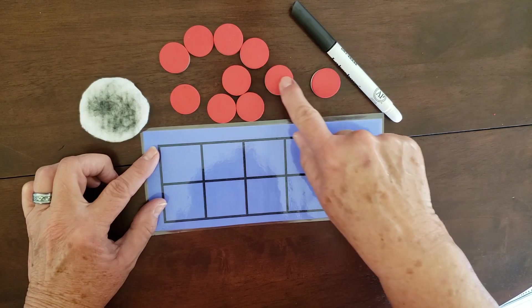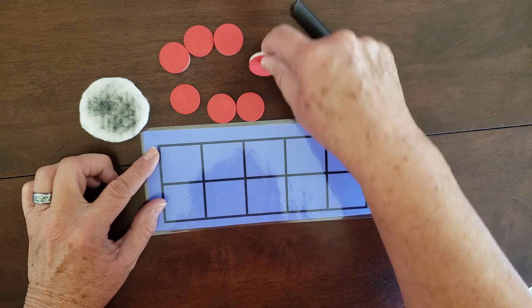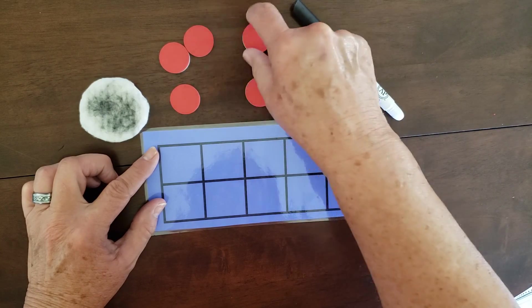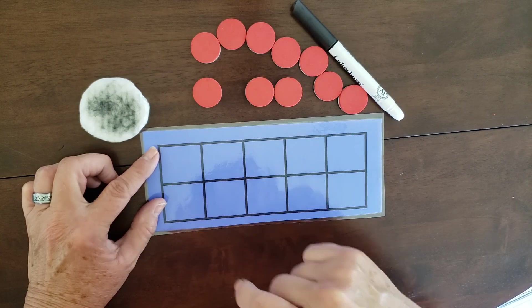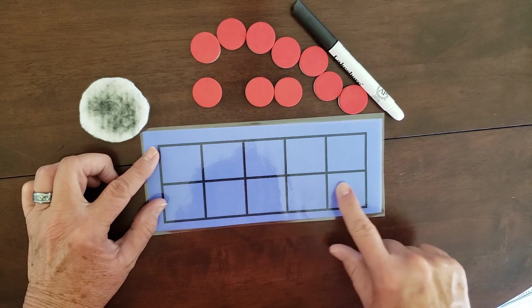We have 1, 2, 3, 4, 5, 6, 7, 8, 9, 10 markers that we're going to use in our 10 frame.